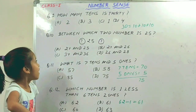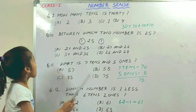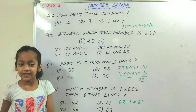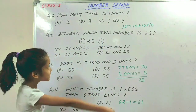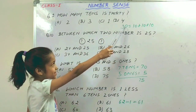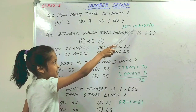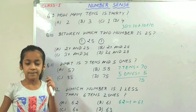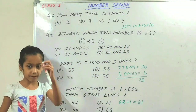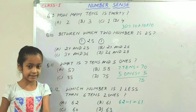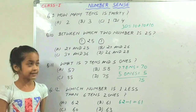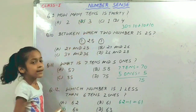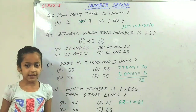The next question is: how many tens is 30? We can write 30 as 10 plus 10 plus 10. So we have to add tens 3 times. The answer is 3, option B.